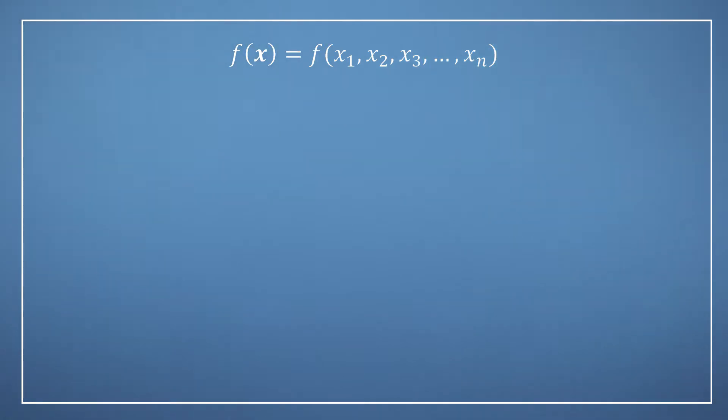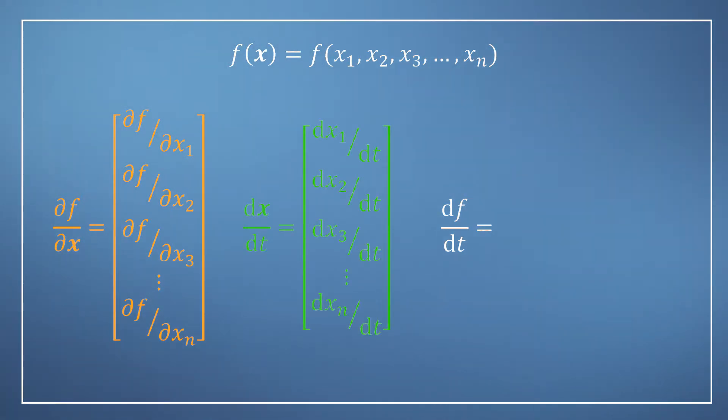Now, we are looking to once again build an expression linking f to t through the sum of the chains of each of its variables. So, we're going to need all the partial derivatives of f with respect to x, as well as the derivatives of each component of x with respect to t. Once again, we're going to store all of these objects in a pair of n-dimensional vectors.